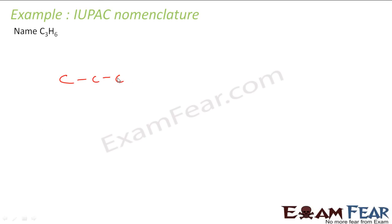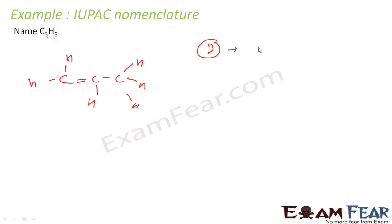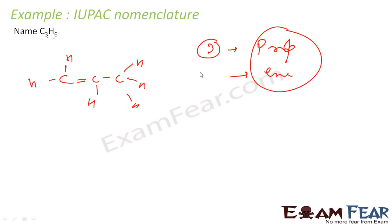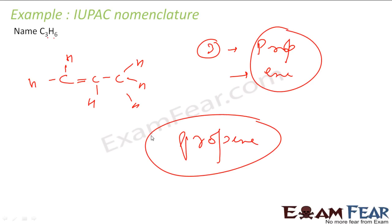Now C3H6. If you draw C3H6 — one, two, three carbons — you can see this is actually an alkene, because three times two equals six hydrogens. So it will have one double bond. The structure has one H on each carbon accordingly. How many carbon atoms? Three, so use 'prop'. Any double bond? Yes. No triple bond. So we use 'ene'. Add these two and you get propene. Counting the carbons — three, so prop; double bond, so ene — propene.